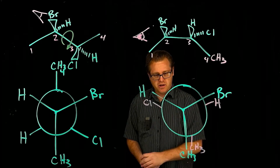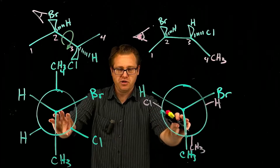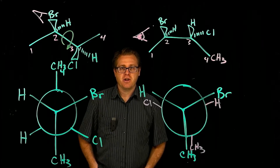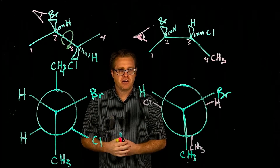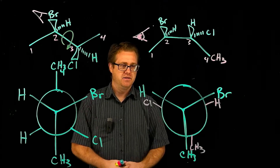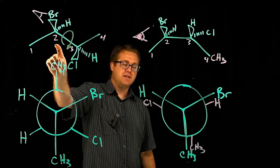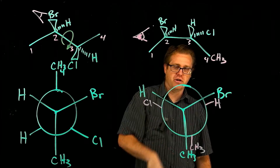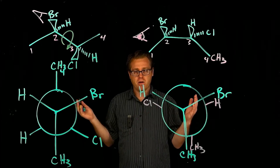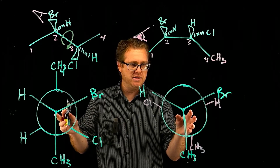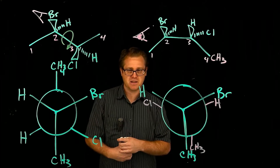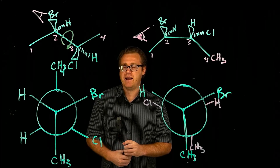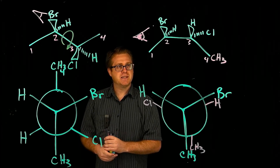So what this does for us is allow us to compare these two Newman structures. From principles you're going to learn, you can look at these two Newman projections and say this conformation is lower in energy and more stable than this one. That's the power of drawing Newman projections — it allows you to figure out which conformation is the most stable or the lowest in energy. So that's where we'll end with this video. If you have any questions, please let me know.